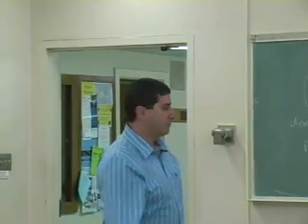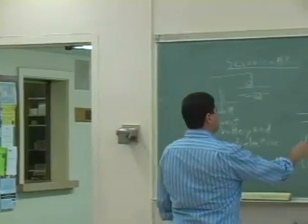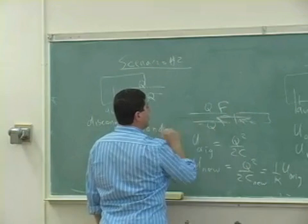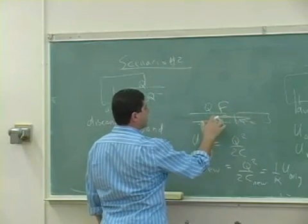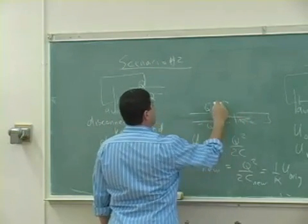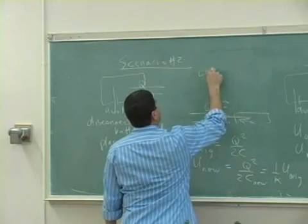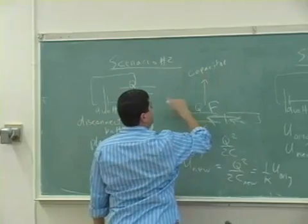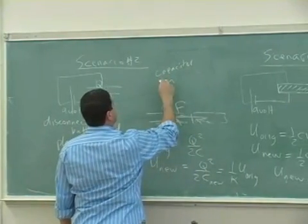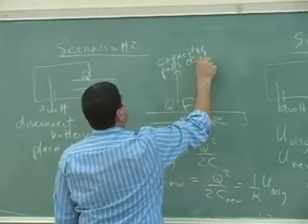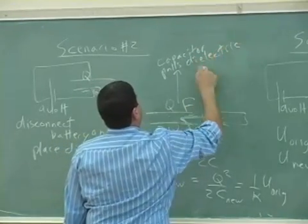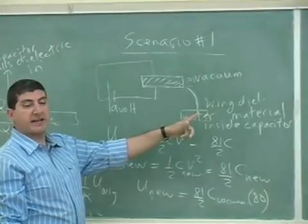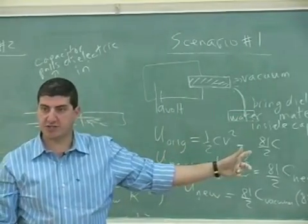But in this case there's no battery attached to it. There's no battery attached to it, so it's a much different situation. So here, you can almost kind of say it this way: capacitor pulls dielectric in. And then in this case, capacitor resists the dielectric because the battery is still there.